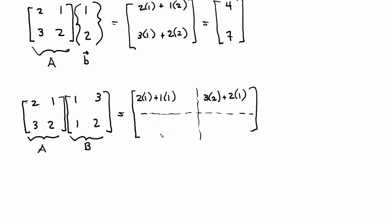This one is the second row of A times the first column of B. 3 times 1 plus 2 times 1. And this is the second column of A, second row of A, second column of B. So 3 times 3 plus 2 times 2. And then, that equals, just doing the math, 3, 8, 5, 13.